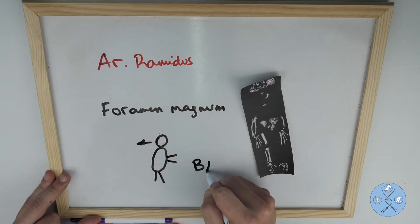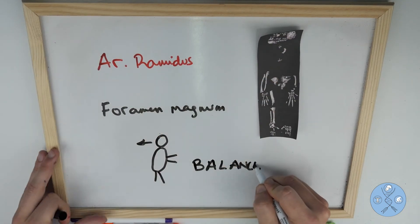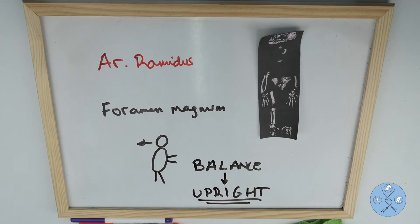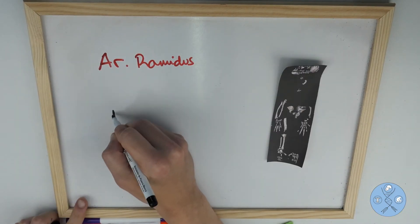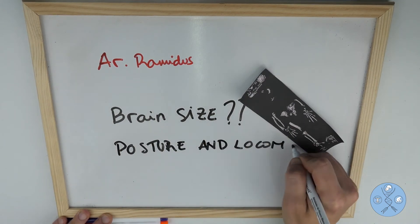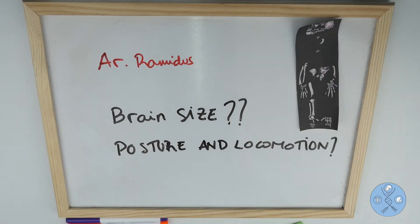This is a change that was expected to have happened in early hominins in order to have a better balance of the head and the body to be able to stay upright. However, we currently lack information about the size of the brain of Ardipithecus ramidus and evidence of its posture and locomotion is not very good.